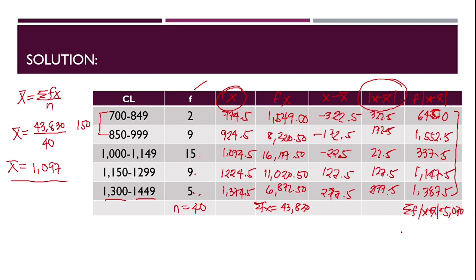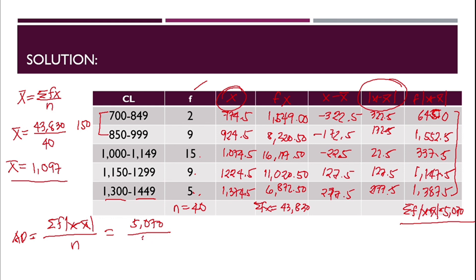Now apply the formula: average deviation equals summation of f times |x minus x̄| over n, which is 5,070 over 40. Using a calculator, 5,070 divided by 40 equals 126.75. So the average deviation of the data is 126.75 pesos. That's all for the average deviation.